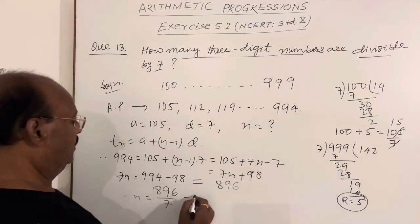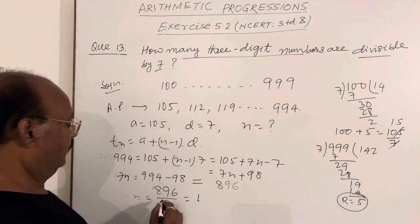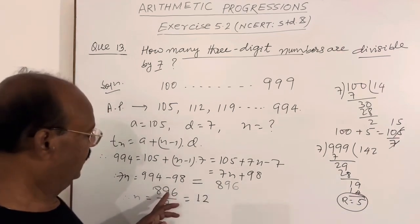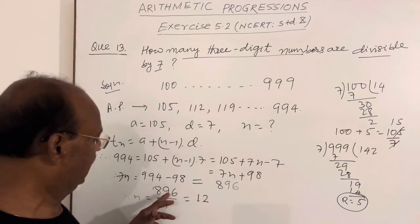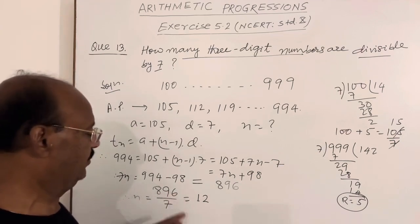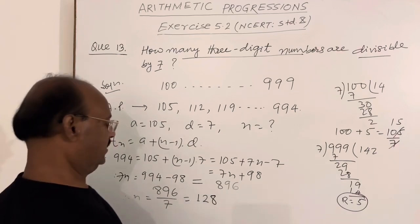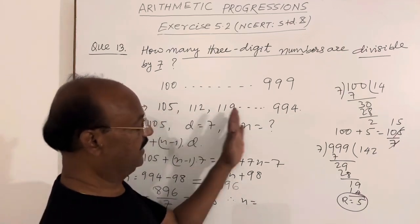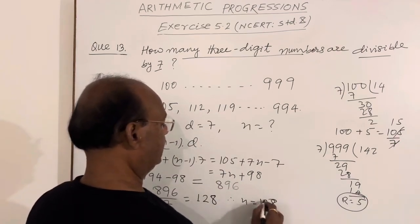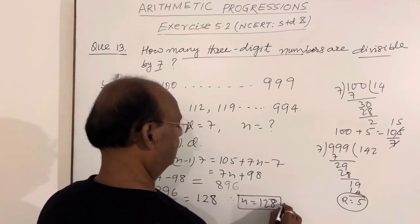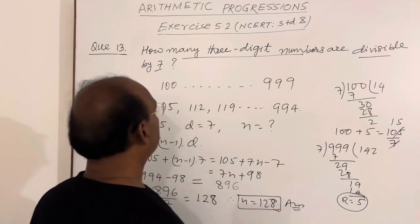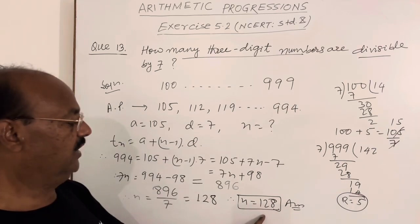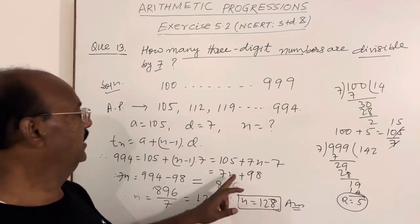Therefore, n equals 896 divided by 7. Simplifying this: 7 times 1 is 7, 19, 7 times 2 is 14, 5, 56, 7 times 8 is 56. Therefore, the value of n, which means the number of three-digit numbers, is 128.